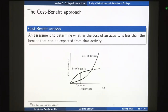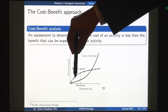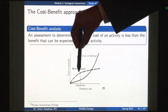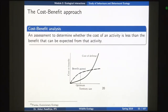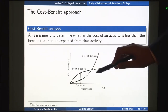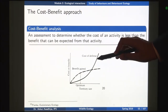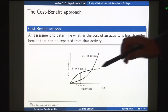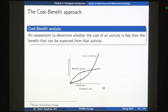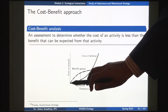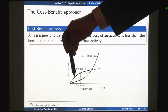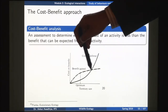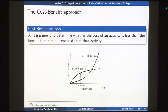As territory size increases, there is an area where the benefit is greater than the cost — those are the territory sizes the tiger will go for. At a particular large size of territory, the cost of defense is greater than the benefit, so a tiger may not go for that size. The area where the tiger is going to operate is from the point where benefit first exceeds cost up to where cost again exceeds benefit.